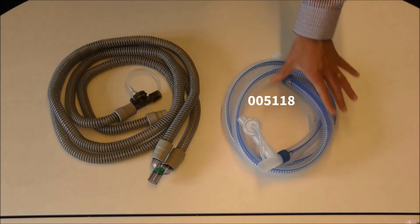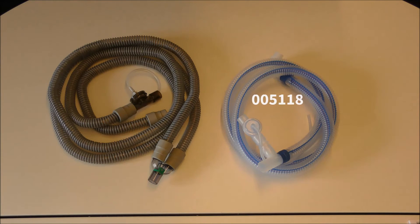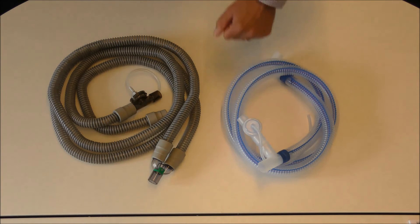The disposable circuit has two channels in the tube. One channel leads the air to the patient and the other channel leads the air away from the patient to the exhalation valve.